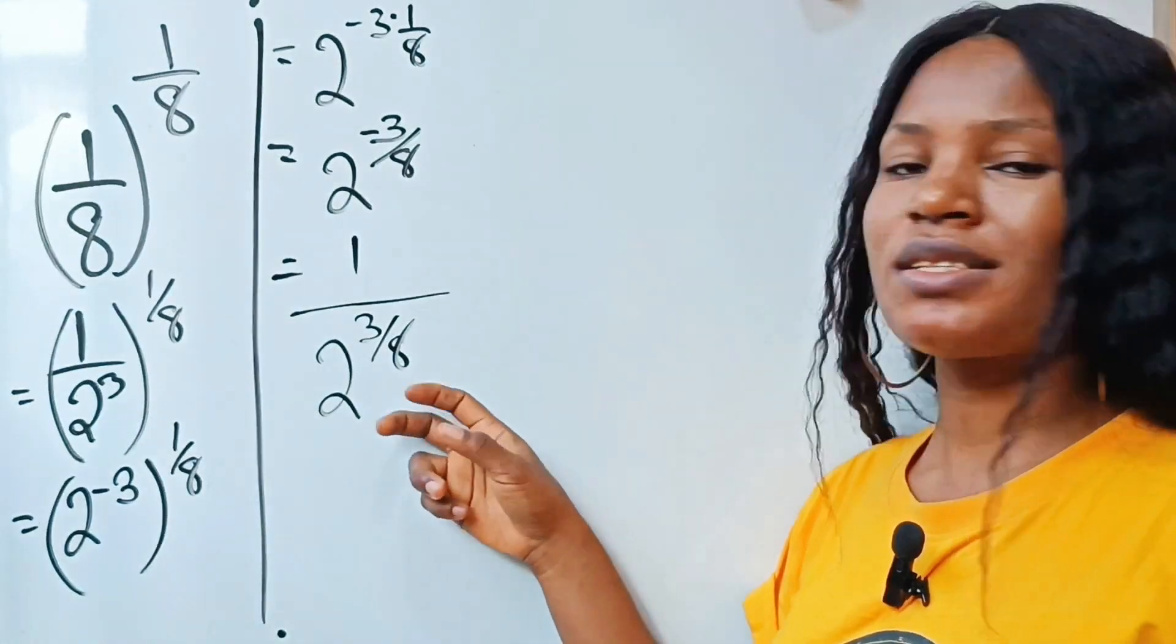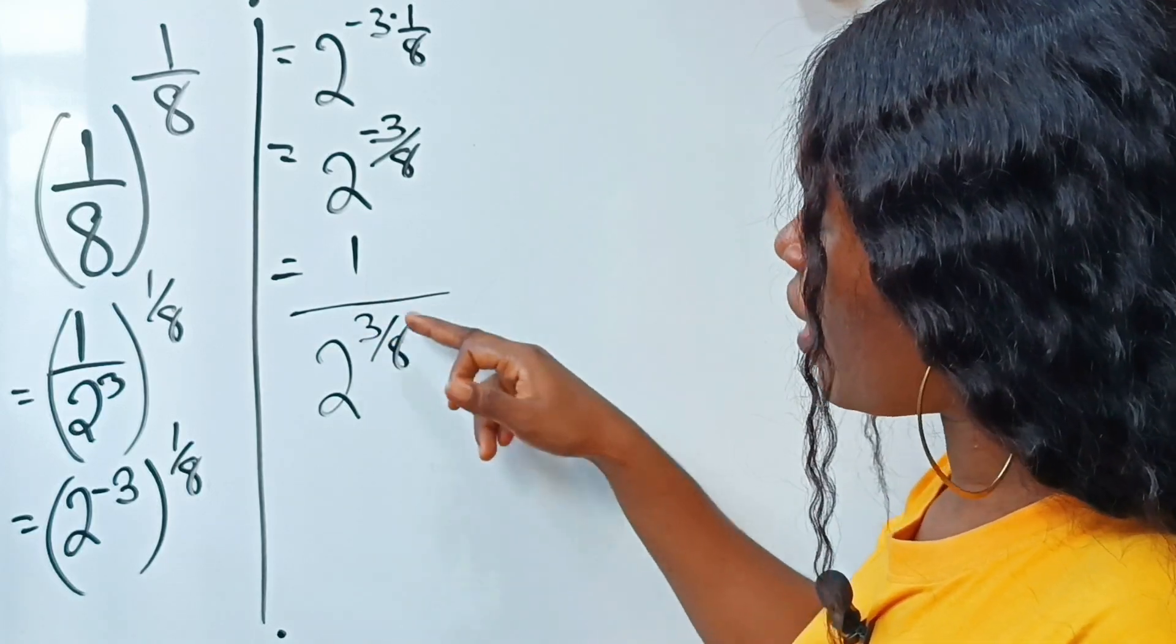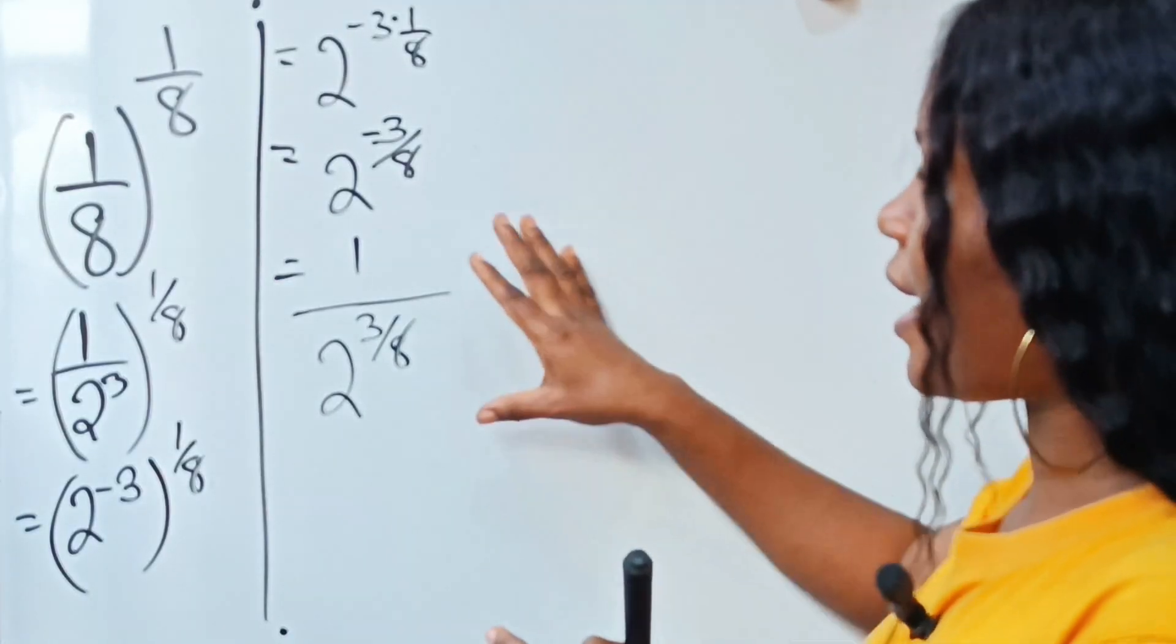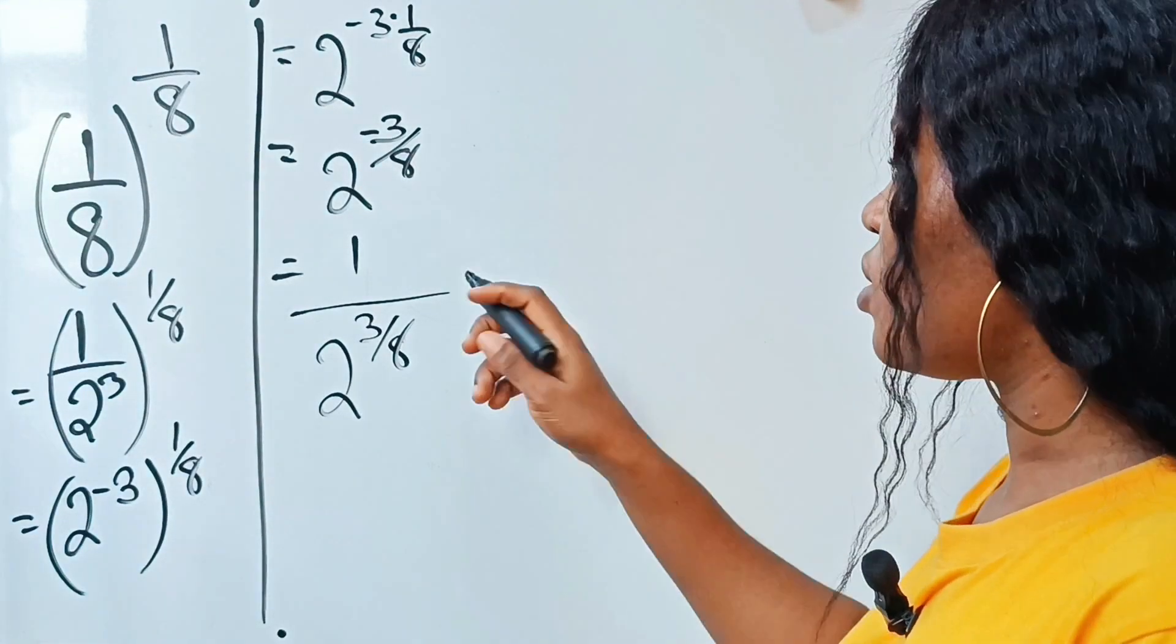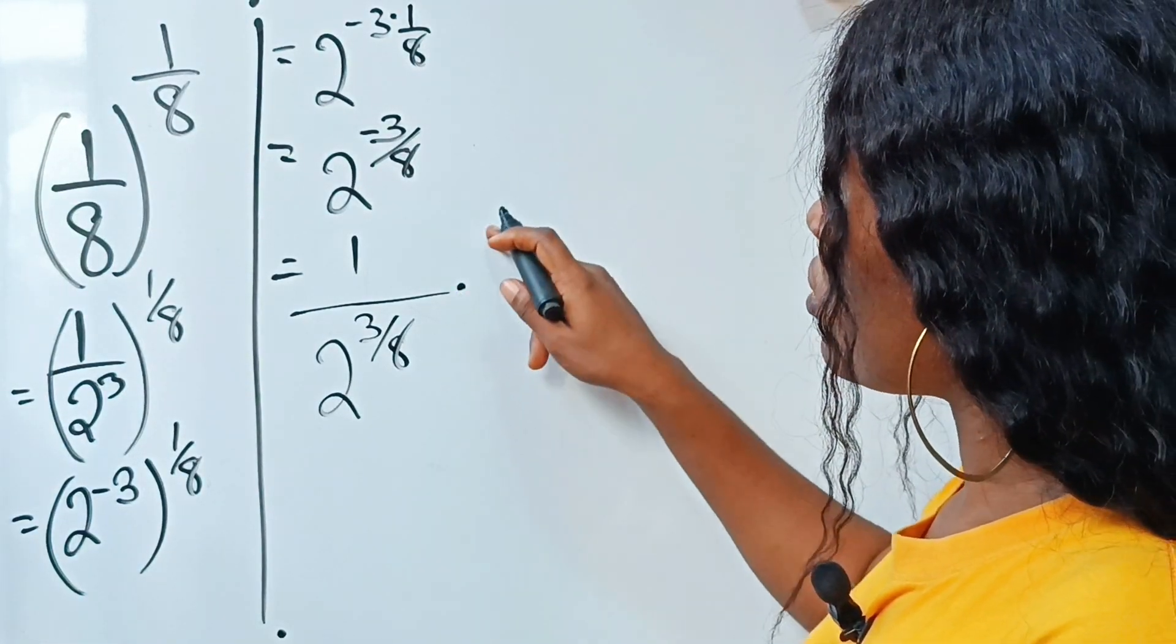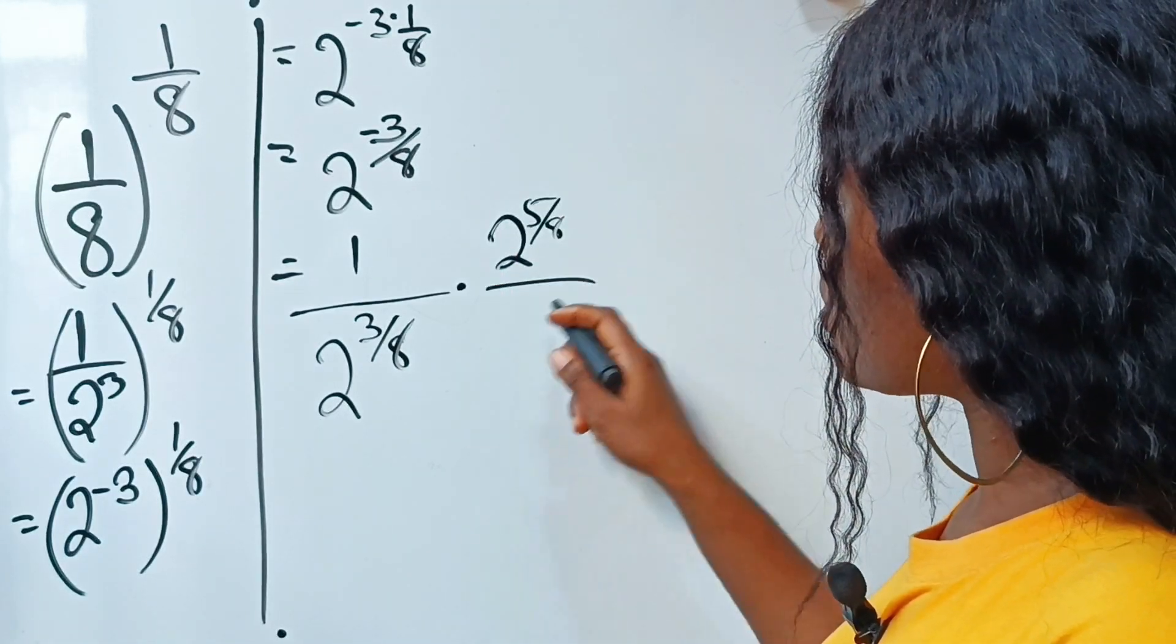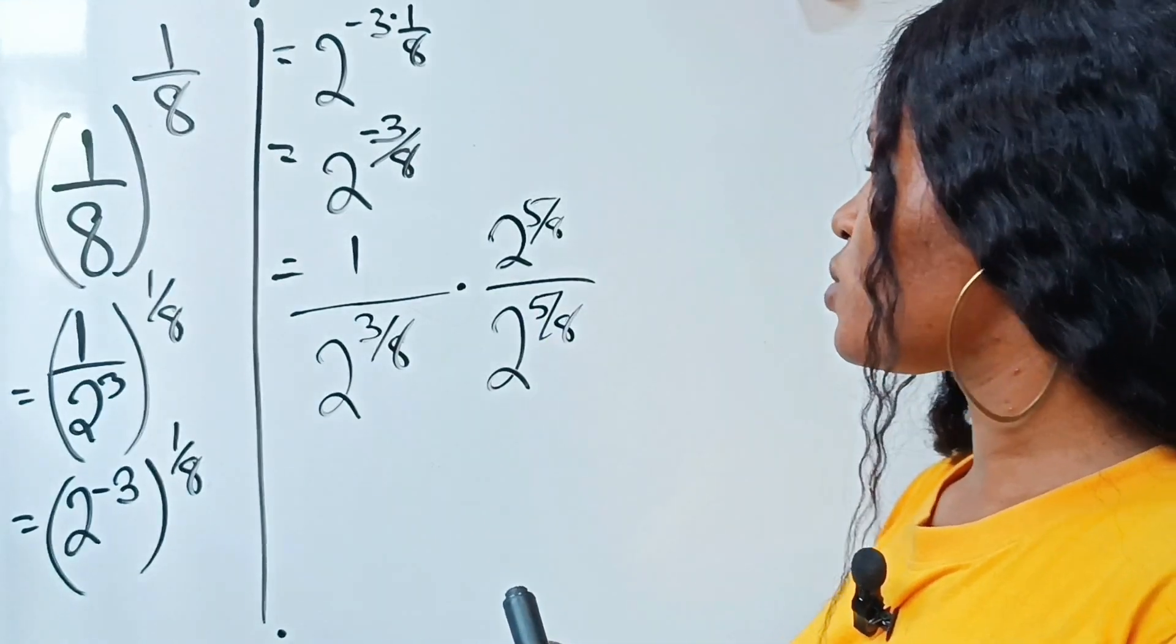Now I want to manipulate this denominator in such a way that I can remove this 3 over 8. The way to do it so I can easily simplify this is to multiply the numerator and the denominator by 2 to the power of 5 over 8.